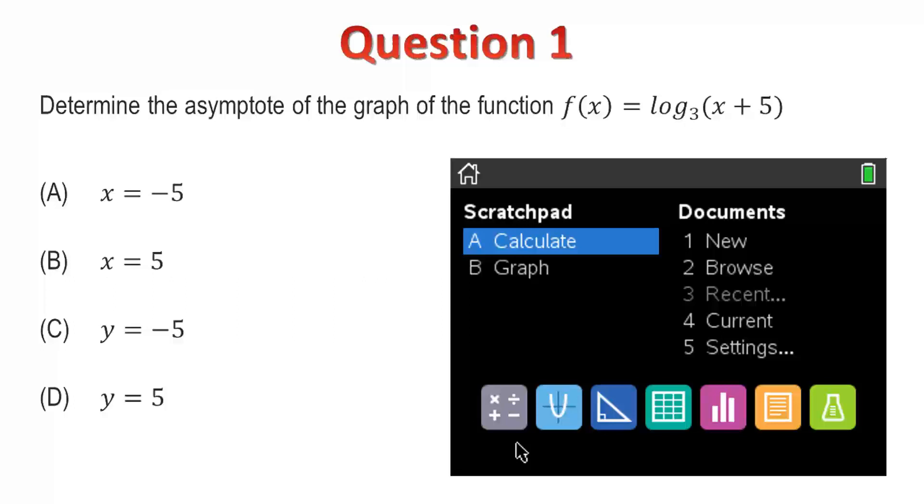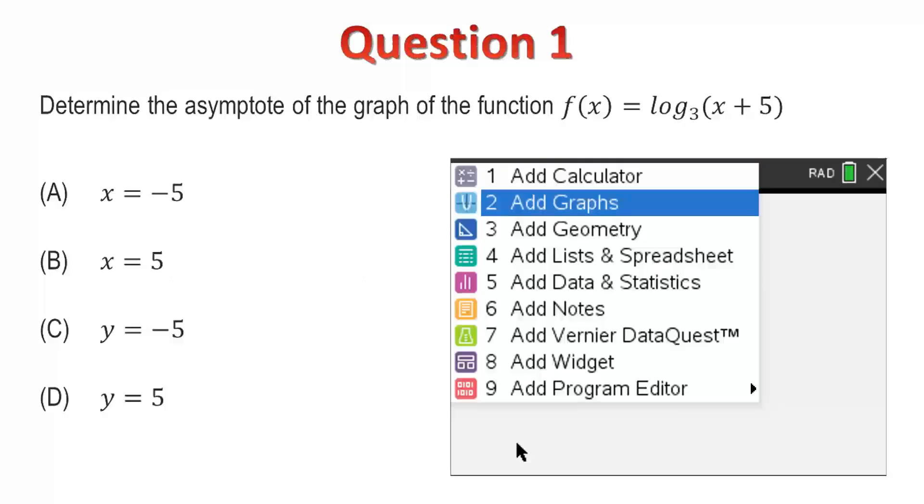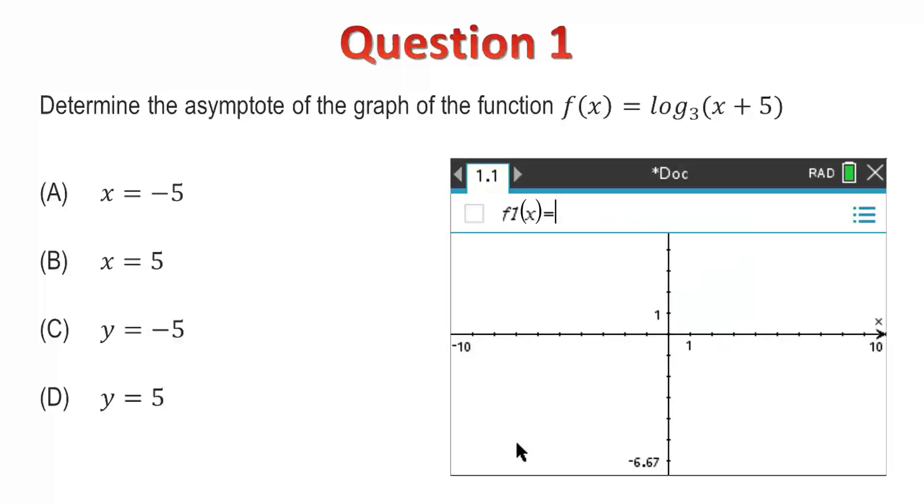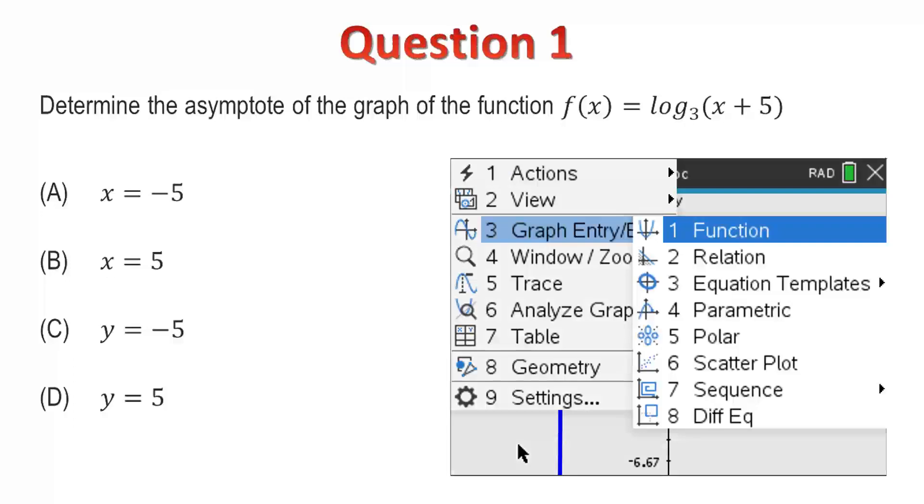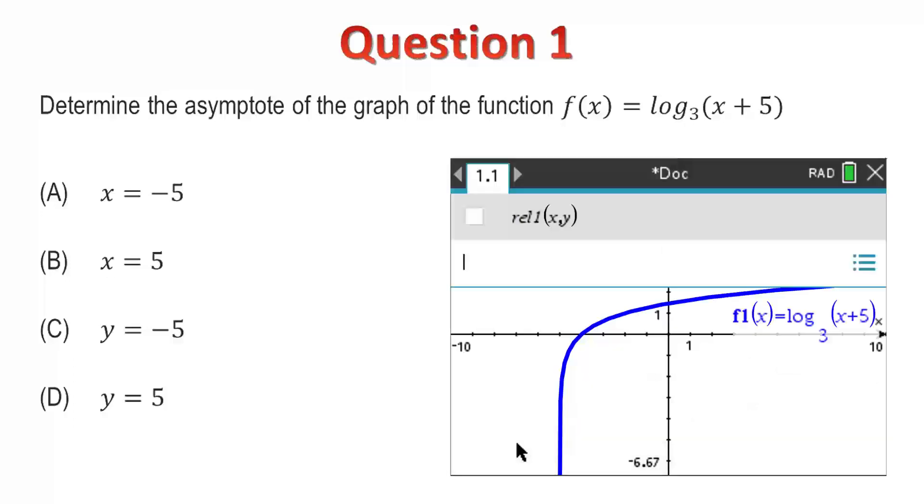As this is the first question, I'll start a new document. I'll insert a graph application and graph log base 3 of x plus 5. With the standard window settings, we can see that the graph appears to have a vertical asymptote about the line x equals negative 5. We can graph the line x equals negative 5 just to provide further visual confirmation. Based on this information, I'll select option A.